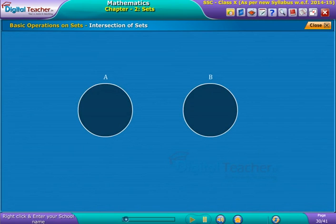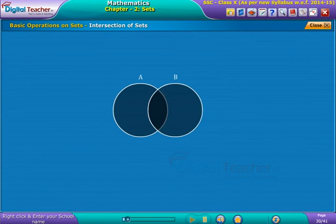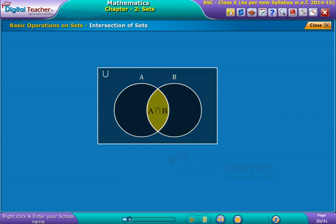Intersection of sets: suppose A and B are two given sets. The symbol that denotes intersection of sets is shown on the screen.